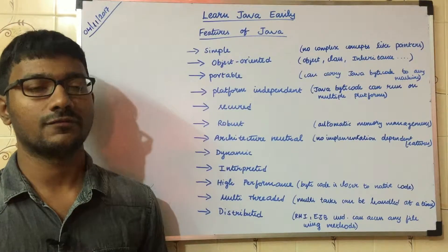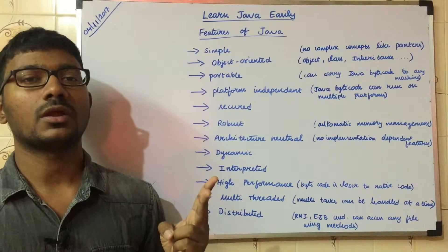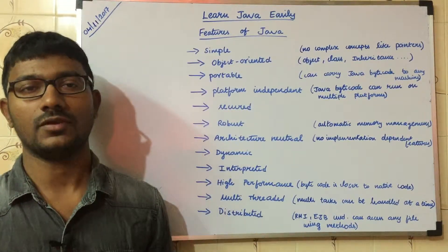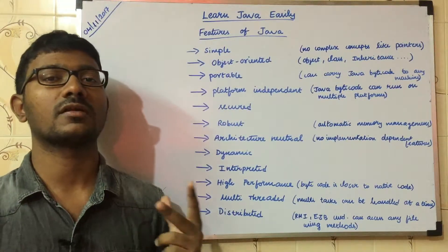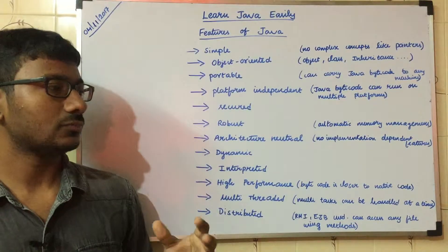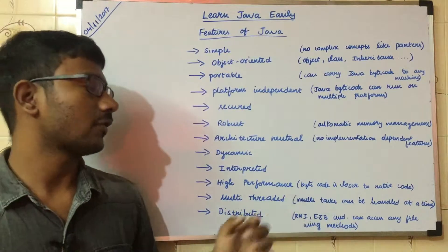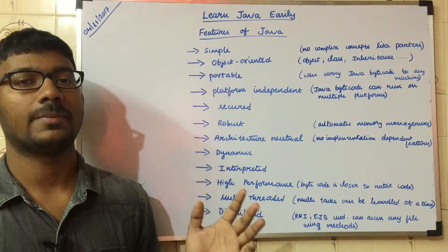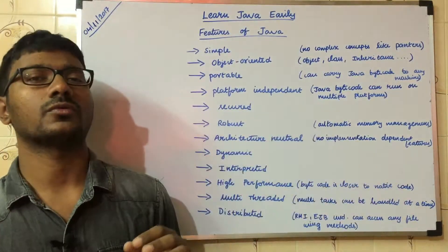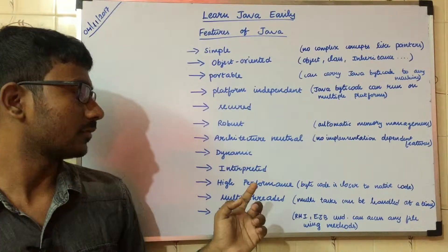If you know C and C++, you would have noticed that for 32-bit architecture, some primitive data types behave in one way, and for 64-bit architecture they behave differently. Whereas in Java, primitive data types behave the same across all architectures. And then high performance — once the Java compiler produces bytecode, that bytecode is very close to native code, though C and C++ still dominate in terms of performance.